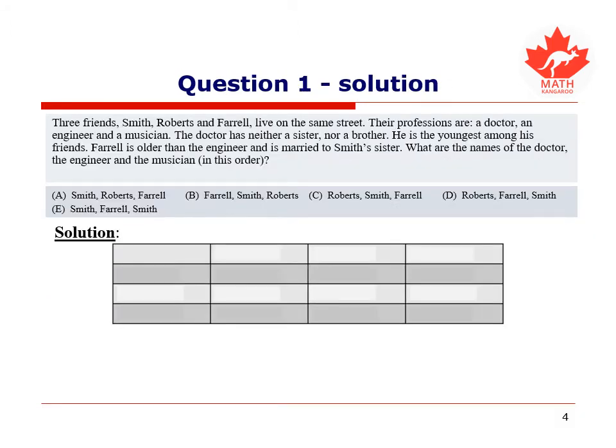When solving for logic problems, it helps to create a true or false table based on our given information, where O is known as true, and X is known as false. In this case, the table will contain the names of each person and their profession.